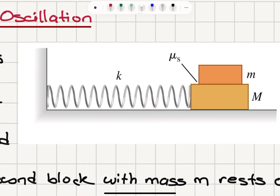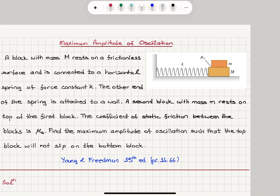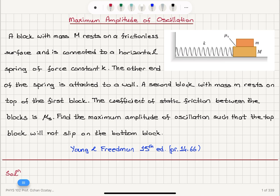We have a block with mass capital M and a block with mass lowercase m. There is friction between the two with coefficient of static friction mu sub s. There is no friction with the bottom surface, and we have a spring with spring constant K. We want to know the maximum amplitude of oscillation so that this block will not slip.